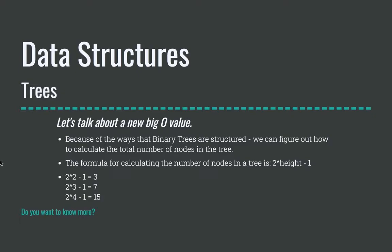So basically, in trees, let's talk about a new big O value: big O of log n. Because of the way that binary trees are structured, we can figure out how to calculate the total number of nodes in the tree. If you have the total number of nodes, you can figure out certain things, or if you have the height of the tree. The formula for calculating the number of nodes in a tree is two to the power of height minus one.